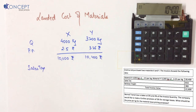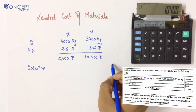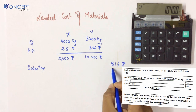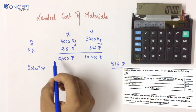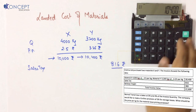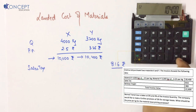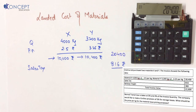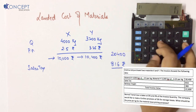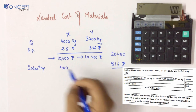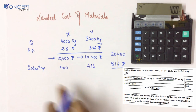Sales tax: the final figure is 816 rupees. Sales tax is levied on value, so we apportion 816 in the ratio of 10,000 to 10,400. Total value is 20,400. So for X: 816 divided by 20,400 into 10,000 equals 400 rupees. For Y: 816 minus 400 equals 416 rupees.